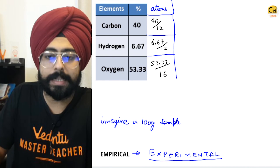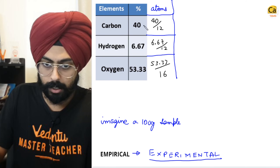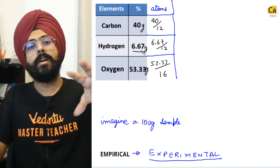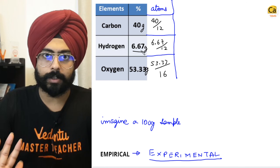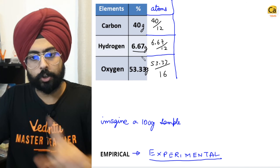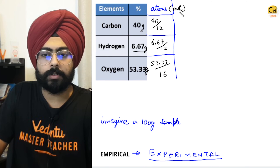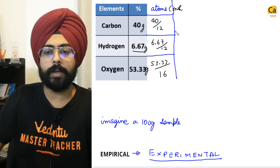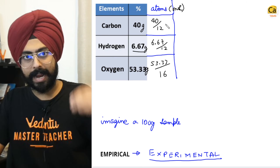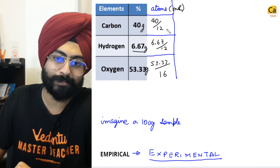6.67 atoms does not make sense, but 6.67 moles of atoms makes perfect sense. Whenever I say atoms here, I mean moles of atoms because weights are in grams. If you don't understand the difference between the weight of an atom and the weight of one mole of atoms, please watch the very first class of The Epic Mole.